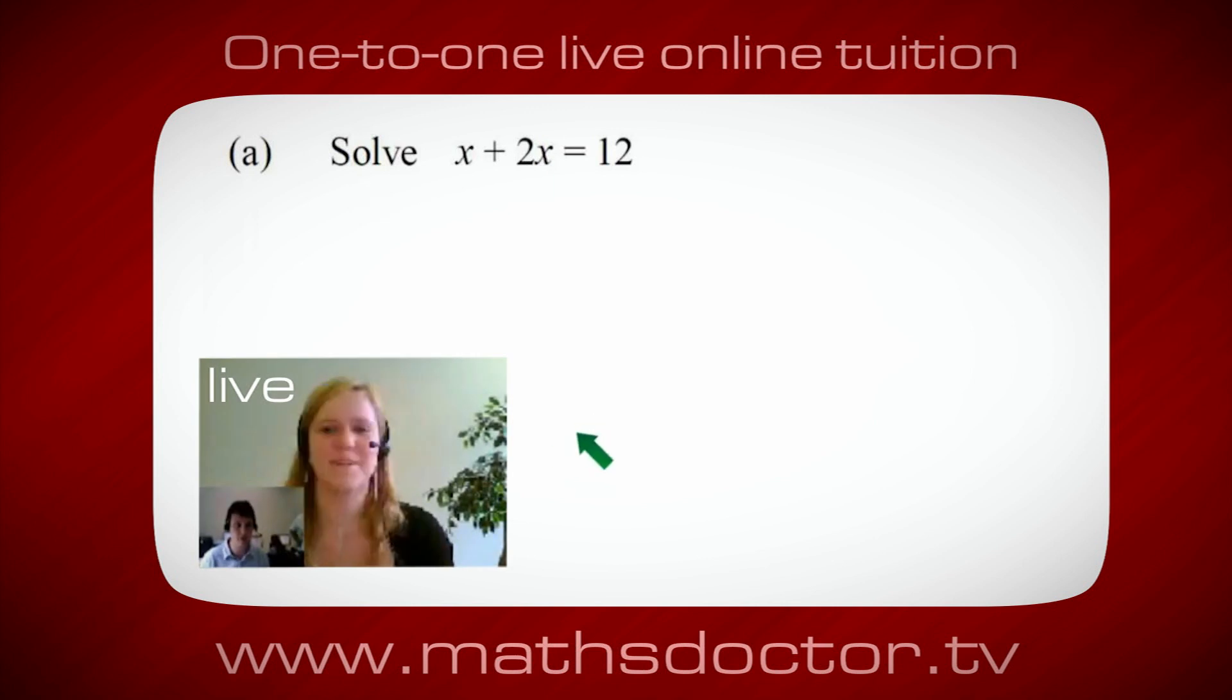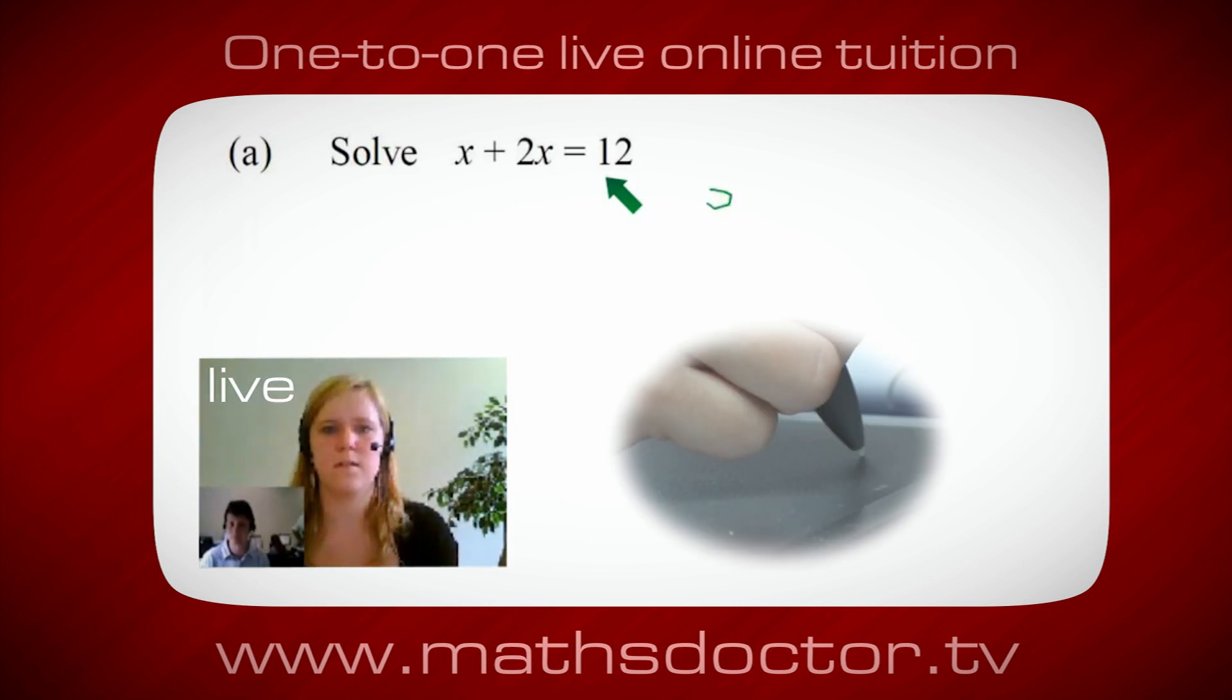Okay Mary, so let's have a look at this one. Solve x plus 2x equals 12. So what do you think you do first? Okay, well I want x on its own, so I would put x equals 12 minus 2x.